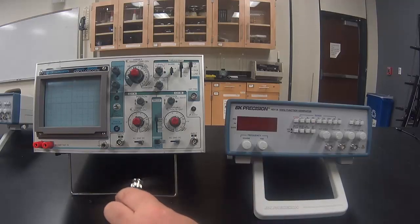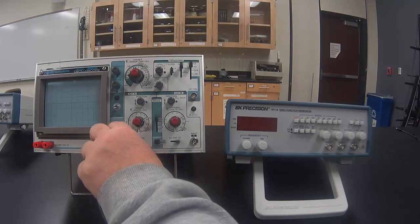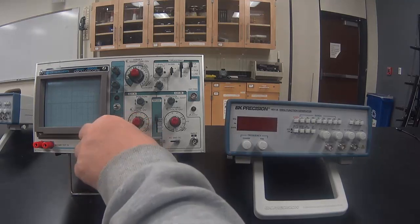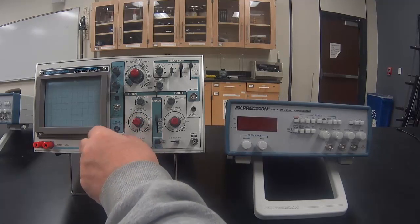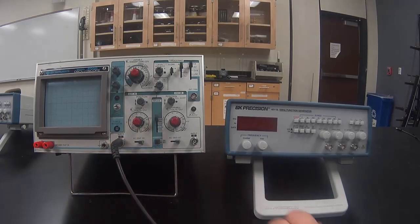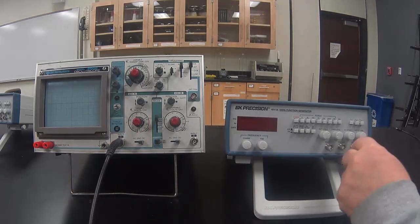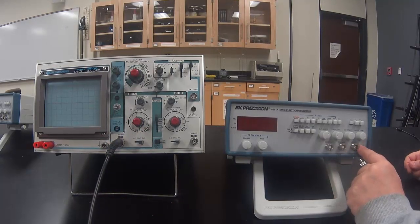Connect one end of the cable to the function generator. Be sure to push it in and turn it until it clicks into place. A bad connection can lead to a bad signal. Connect the other end to the output on the function generator.